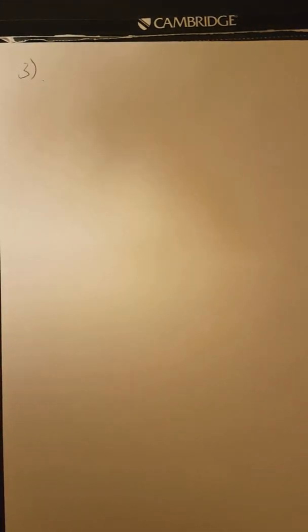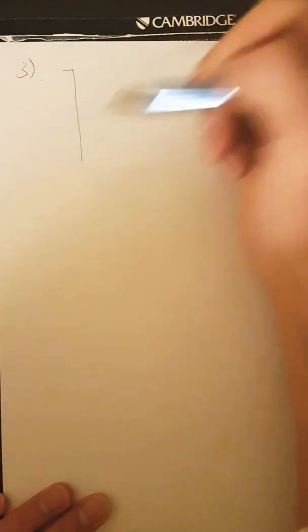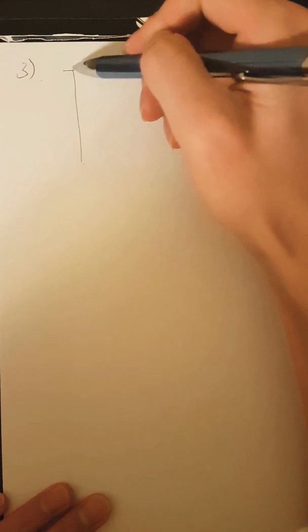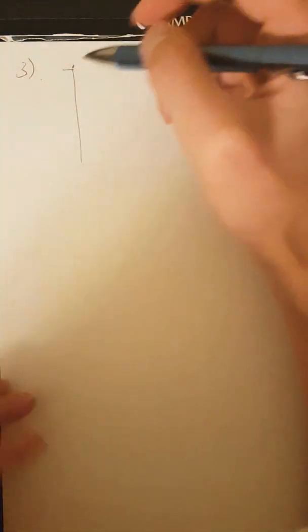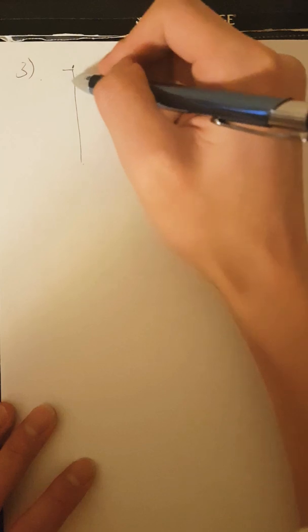So question three. Chelsea's dropping a basketball off a cliff; the ball bounces back up 60% of the height it was dropped at. So let's actually try to draw a diagram and see what it looks like. So let's say this is the cliff, and if Chelsea drops the ball from a certain height, let's call it H.